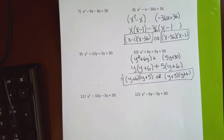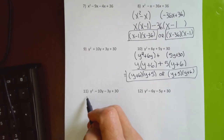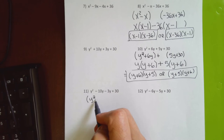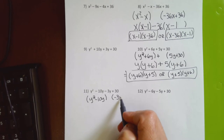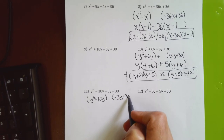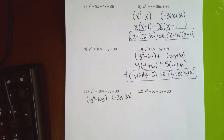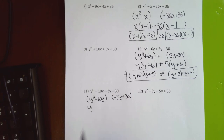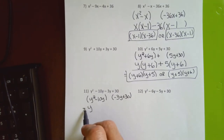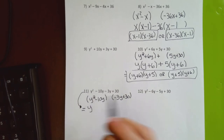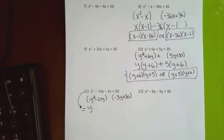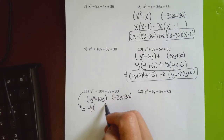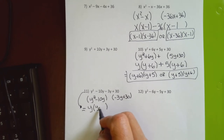For problem 11, I put y² − 10y in the first parenthesis and shove the minus inside the second parenthesis. The first parenthesis has a common factor of y — factoring out y leaves y minus 10. For the second parenthesis, since it leads off with a negative I need to factor out a negative.